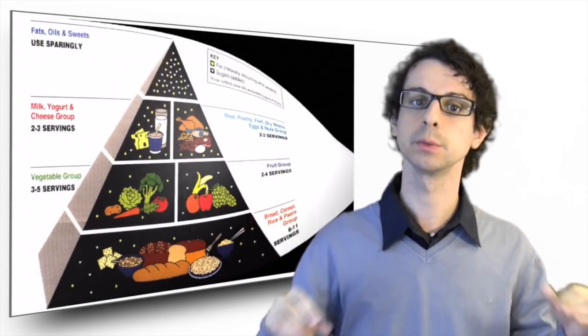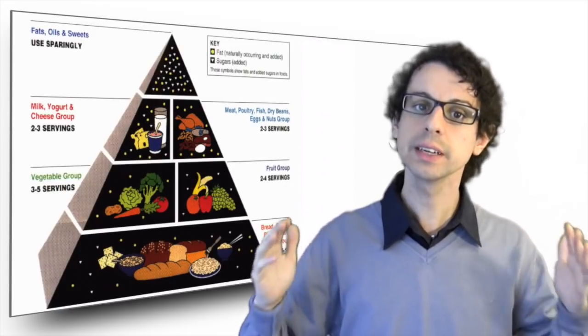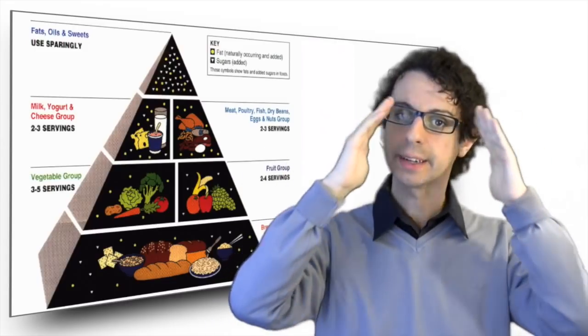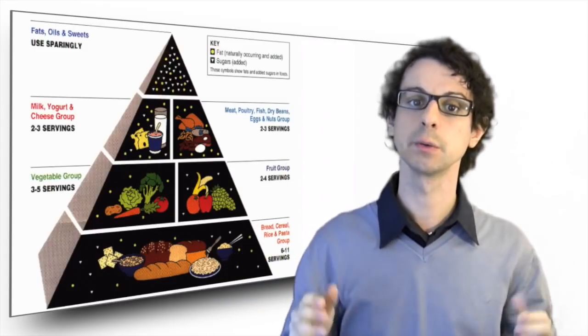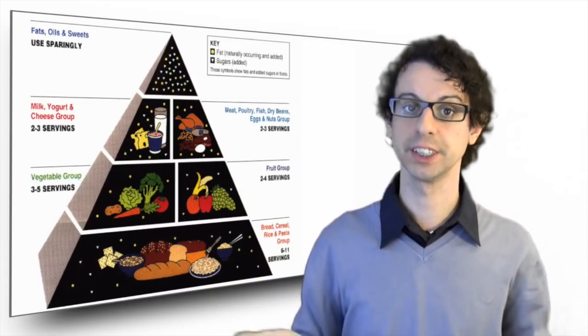The USDA food pyramid was developed in which consumption of fats and oils was clearly identified as public enemy number one, being at the very tip of the pyramid together with sweets, while grains were placed at the basis of the diet.